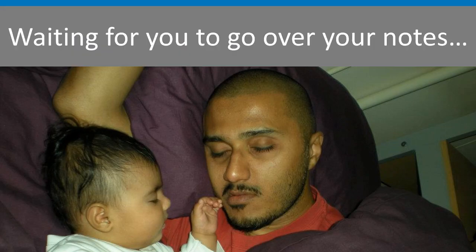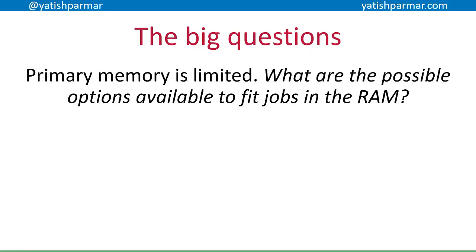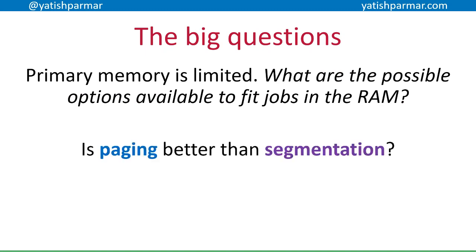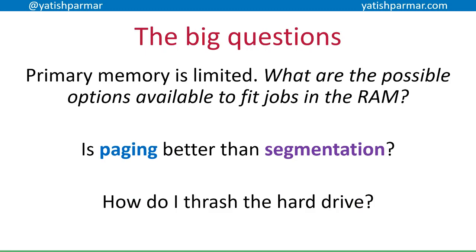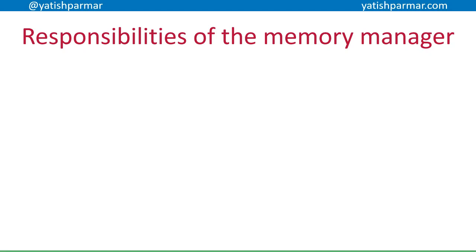The big questions for this video: primary memory is limited, so what are the possible options available to allow us to fit jobs into RAM? Is paging better than segmentation? And what is disk thrashing? Remember, main memory is non-volatile memory used to hold programs and data currently in use — we're referring to the RAM.